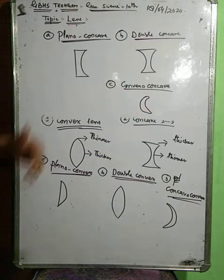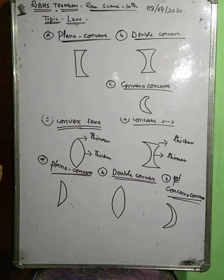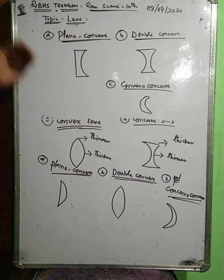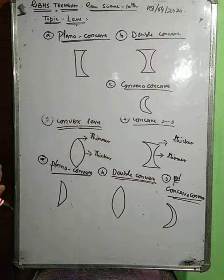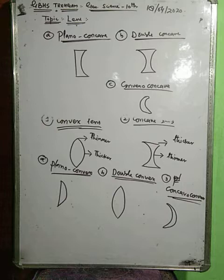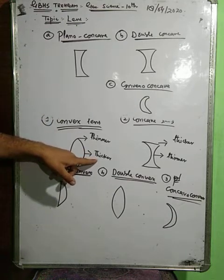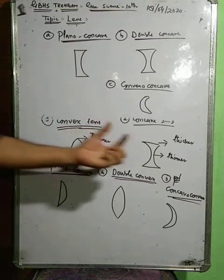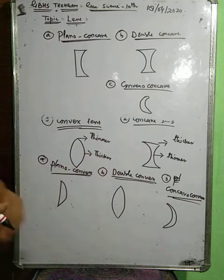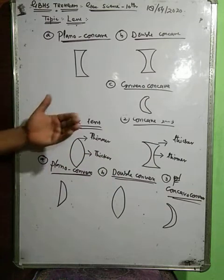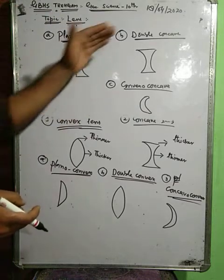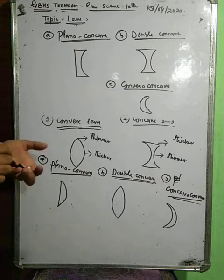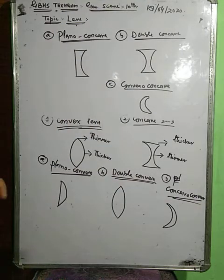So, to summarize: a lens is a transparent glass in which one or both surfaces are curved. There are two types — convex and concave. A lens thicker in the center but thinner at the edges is convex; thinner in the middle and thicker at the edge is concave. Both have three sub-types: plano-convex, double convex, concavo-convex; and plano-concave, double concave, convexo-concave.